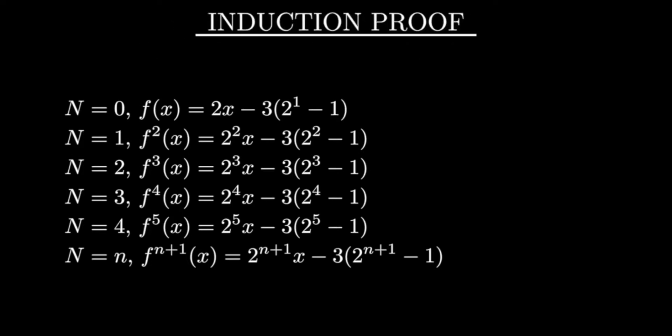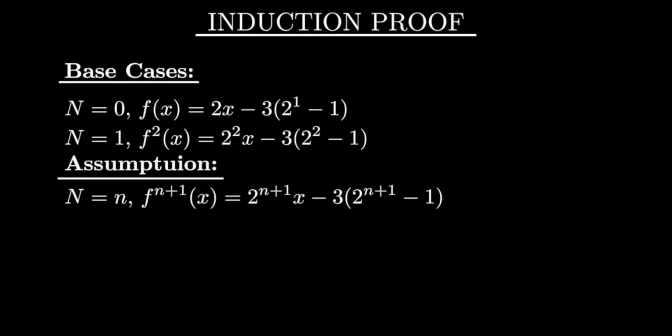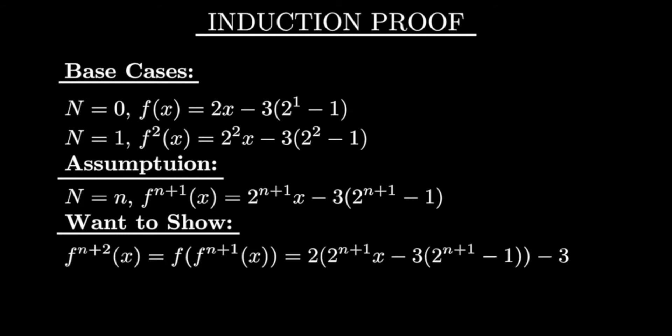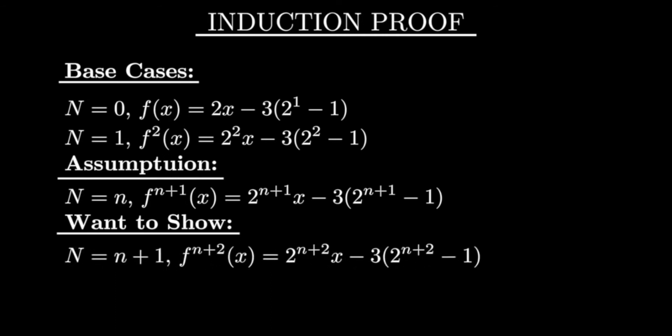From here, we can set up what's known as the proof by induction, and we just so happen to set up what's known as the base case, aka proving it works for n equals 0 and n plus 1. So if we assume that we know it for n, and we can prove that it works for n plus 1, then because we know it works with n equals 0, it has to work for all natural numbers. Thus, we compose our f to the n plus 1th function with f once again to get a f to the n plus 2 function. And when we simplify this, we get 2 to the n plus 2 times x minus 3 times 2 to the n plus 2 minus 1. And that follows our pattern, so our proof is solid by induction.